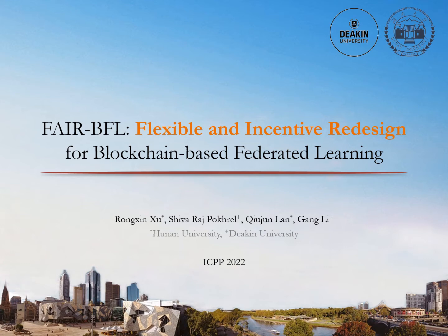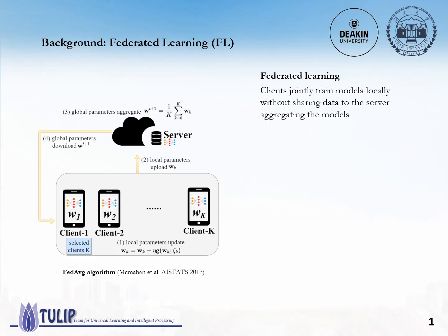In the first few slides, let me explain the background of federated learning and blockchain-based federated learning. As all of you know, federated learning uses numbers of clients to jointly train a model without sharing data. The most fundamental algorithm for federated learning is federated averaging, as shown in this figure. Clients collect data from the environment and train their model locally to get local gradients.